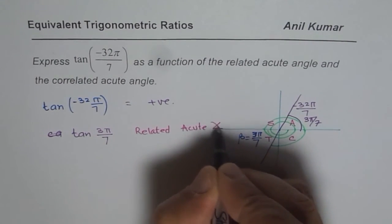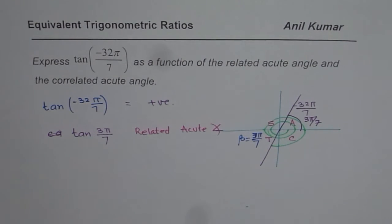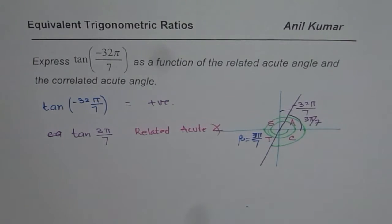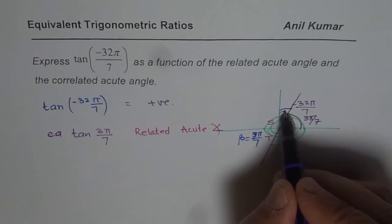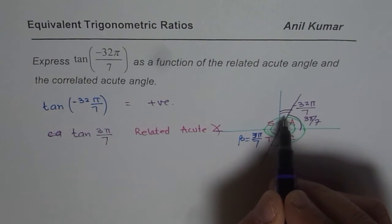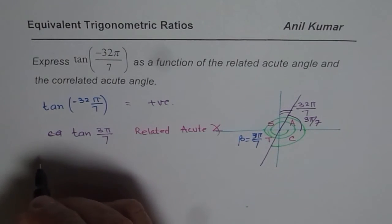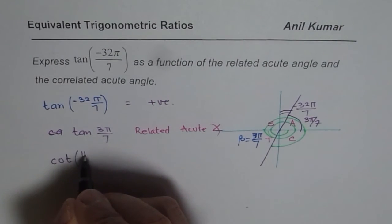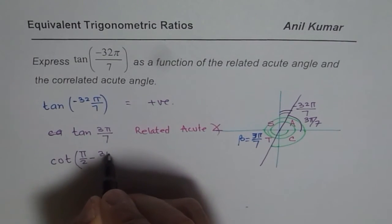Now, co-related acute angle. Co-related means you should be writing in terms of cotangent, right? That is what it is. Now if I have to write in terms of cotangent, I am looking at this angle, right? Now, how much is this angle? π by 2 minus 3π by 7. That is the co-related angle. So I could write this as cotangent of π by 2 minus 3π by 7.